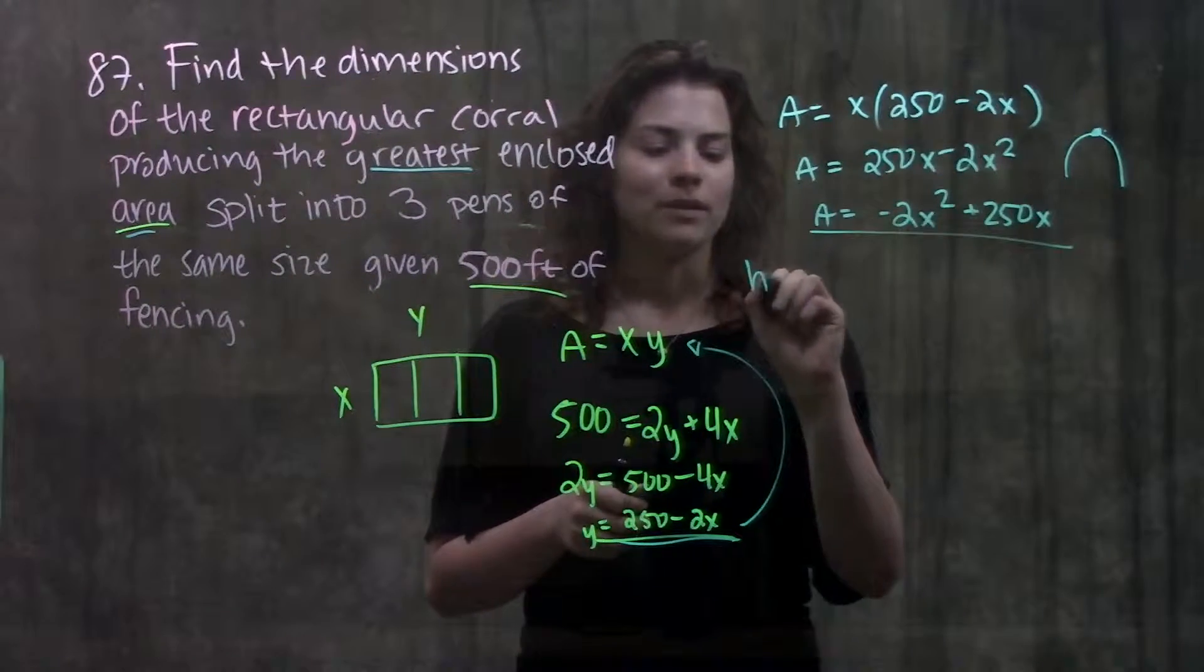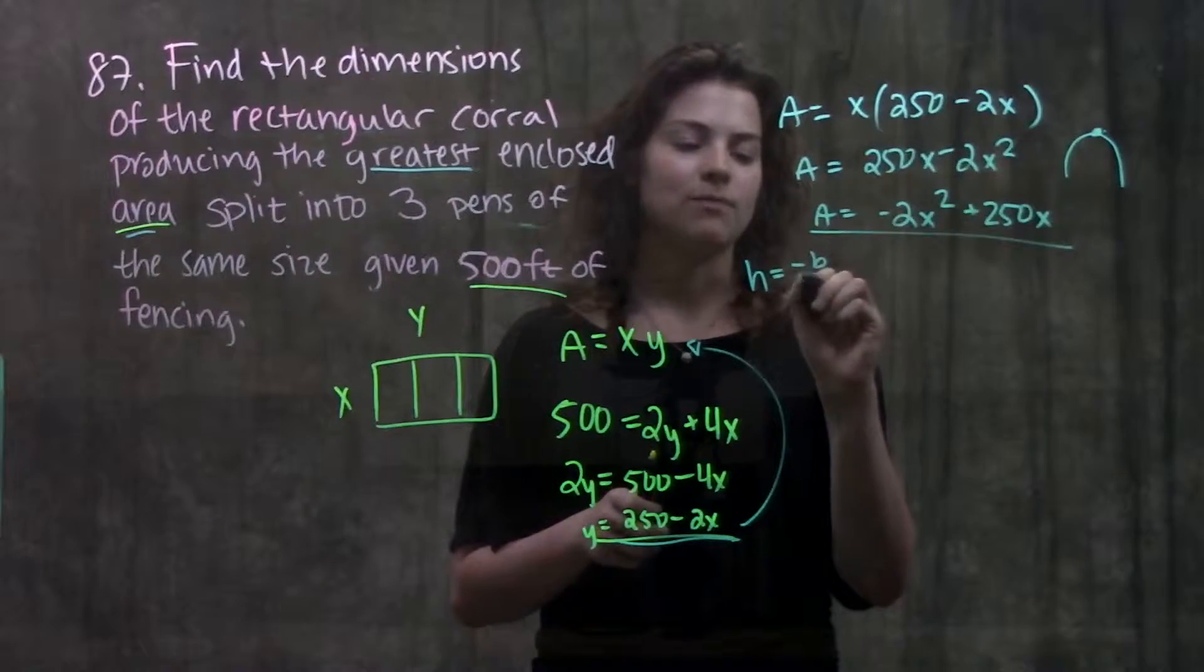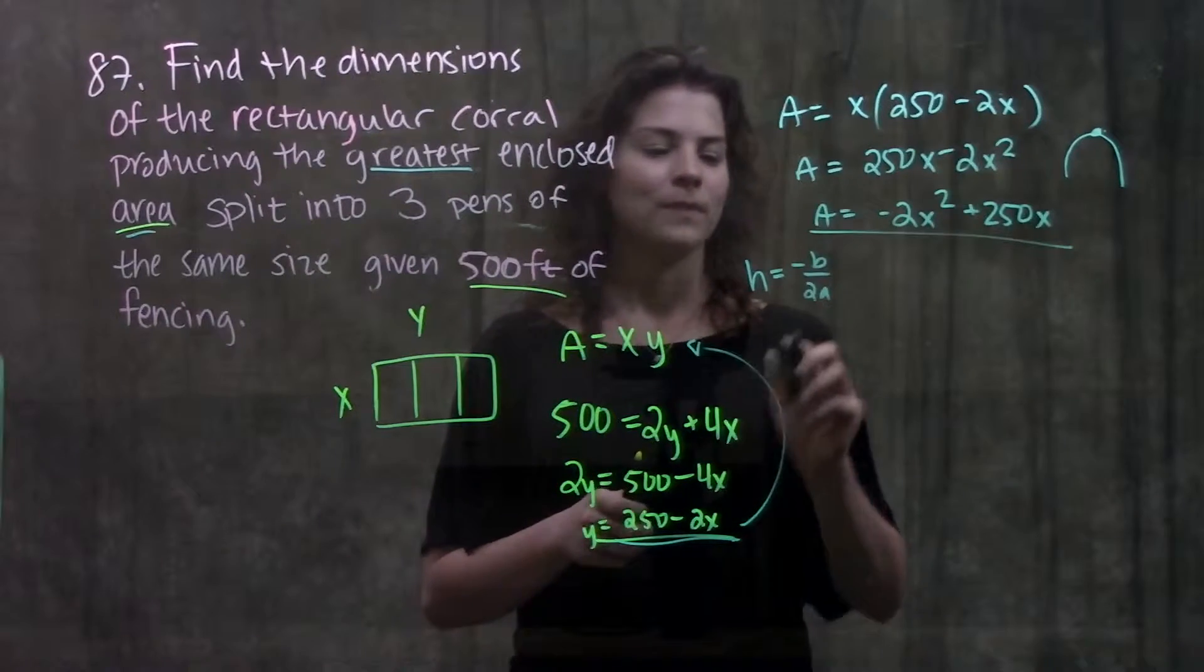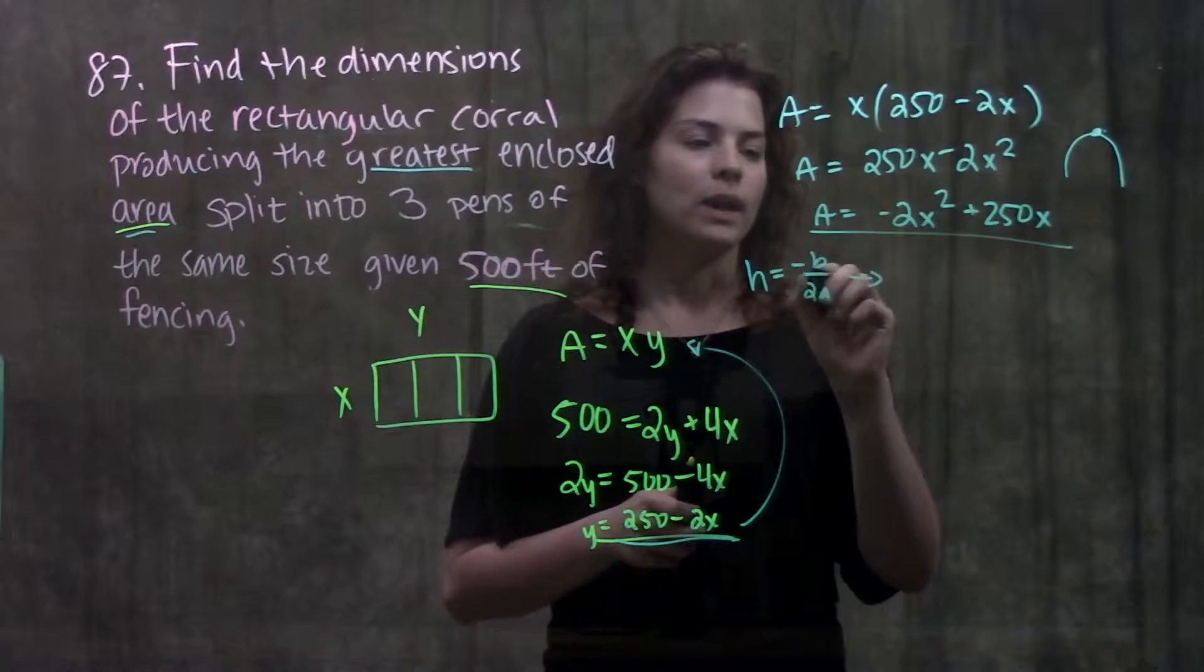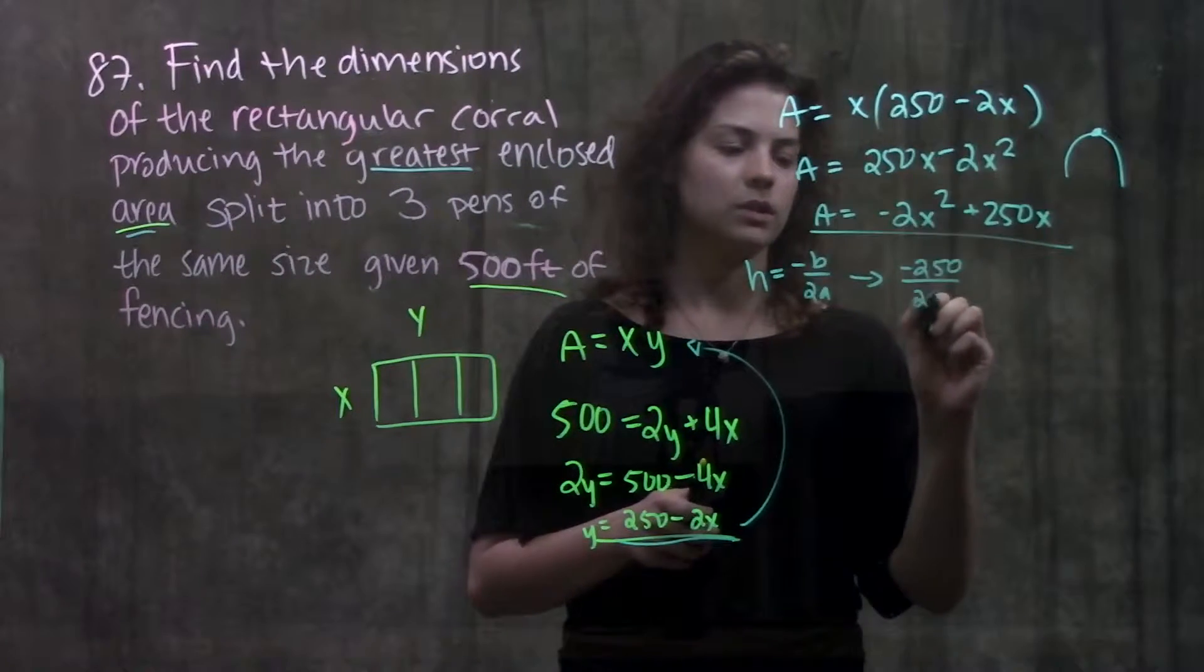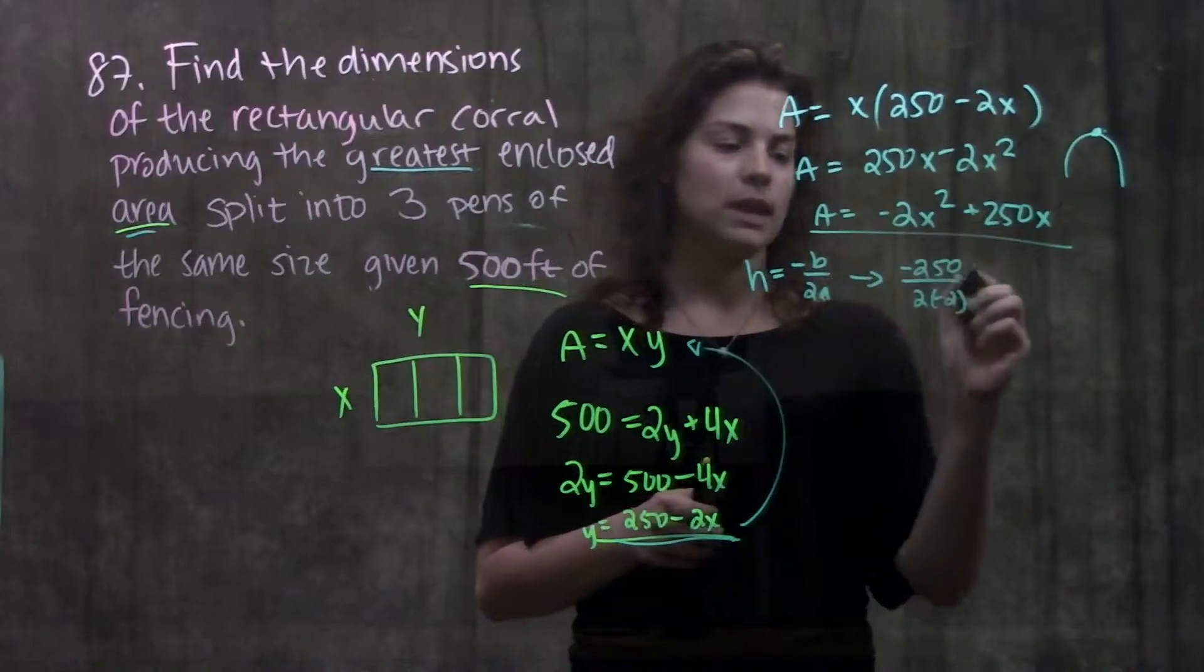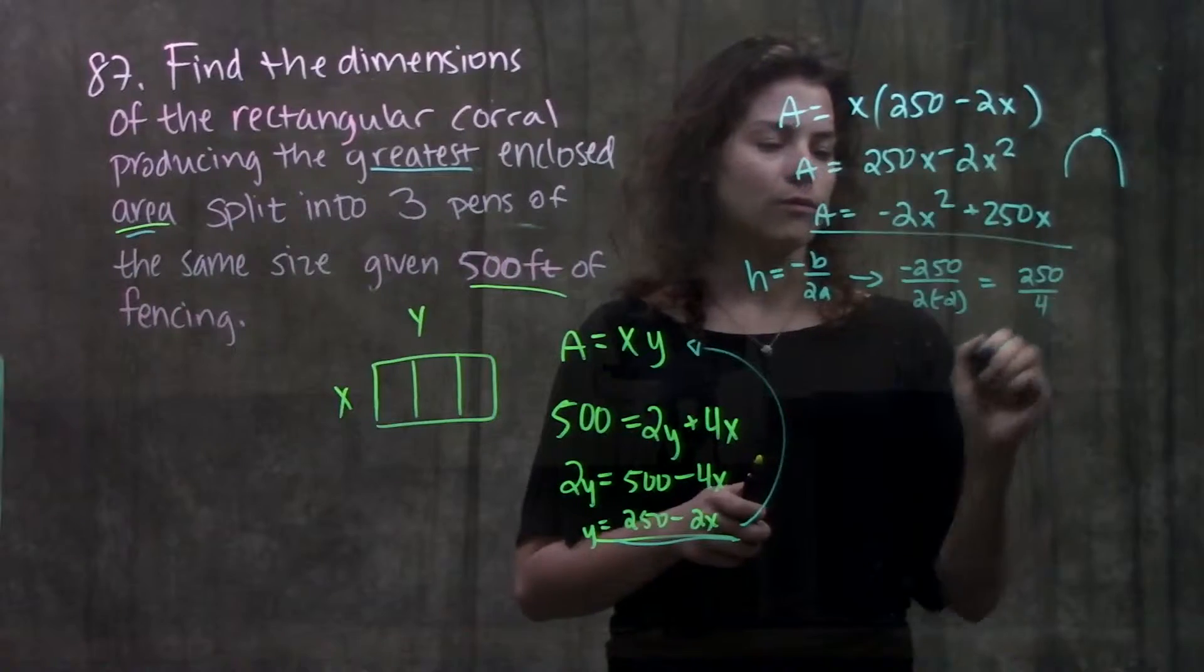And if you remember to solve for the x coordinate of our vertex we just use the formula h is equal to negative b over 2a. Plugging these values from our function into this formula we'll get negative b or negative 250 over 2a or 2 times negative 2 is equal to h. And solving this out we'll get 250 over 4.